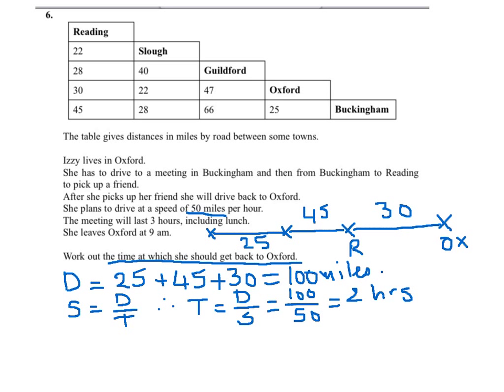To travel the whole distance. What else we know is that she left Oxford at 9 in the morning. So at 9 a.m. she left Oxford and it took her two hours to travel all the distance from Oxford and back plus three hours of a meeting she had. So plus the three hours.